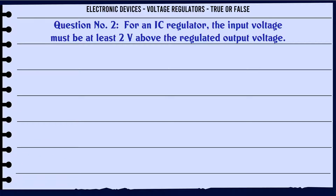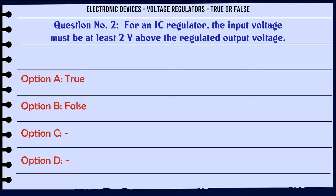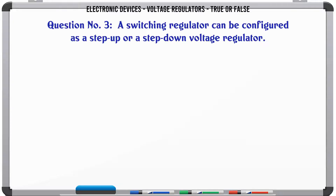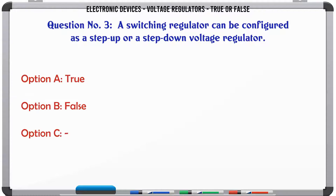For an IC regulator, the input voltage must be at least 2V above the regulated output voltage. A. True. B. False. The correct answer is: True.